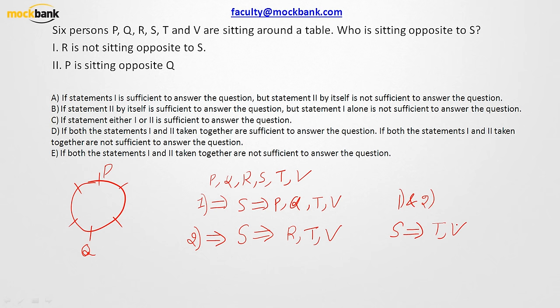Maybe either T or V. So exact answer is something that you are not able to find out. So what option do we need to put over here? Option number E. If both the statements are taken, still you are not able to find the answer.